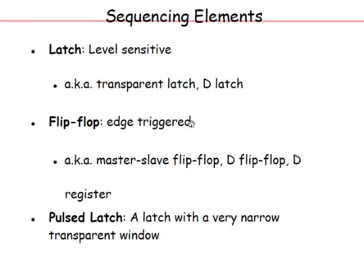In the clocking system, one key element is the sequencing element itself. The basic element is a latch — it is level sensitive, transparent, with two phases: transparent and opaque. You can also have a flip-flop, which is edge triggered, such as a master-slave or D flip-flop. There is also a third approach: a pulsed latch, which sits between a latch and a flop — it is actually a latch but uses a pulsed clock signal.